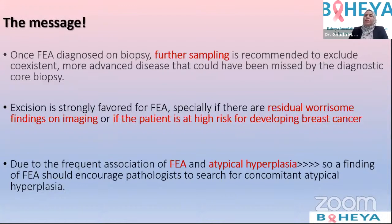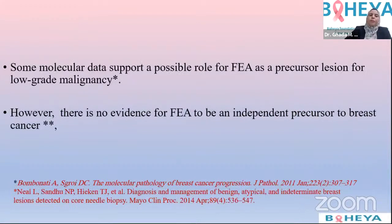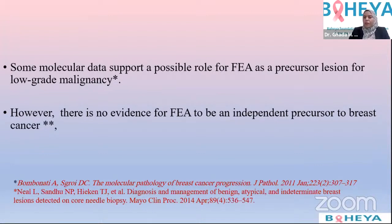The message from this case: once you find flat epithelial atypia, as Dr. Avir said, you should do further sampling by excision. Even if you have FEA in your specimen, do further sectioning because you may find a co-existent more advanced disease missed in the diagnostic core biopsy. Excision is strongly favored for FEA, especially if there are residual worrisome imaging findings or if the patient is at high risk for developing breast cancer. Frequently, FEA co-exists with atypical ductal hyperplasia — pathologists should do more sectioning and search for concomitant atypical hyperplasia. Some molecular data supports a possible role for FEA as a precursor for invasive carcinoma, but there is no strong independent evidence; the risk is usually attributed to its association with ADH or DCIS.